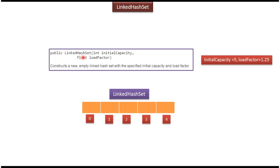This is the third LinkedHashSet constructor, which accepts initial capacity and load factor. If we specify initial capacity as 5 and load factor as 1.25, then this constructor will create a new empty LinkedHashSet with initial capacity 5 and load factor 1.25.